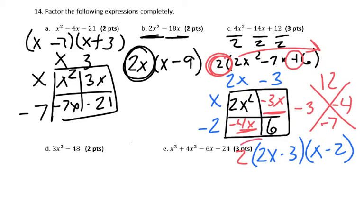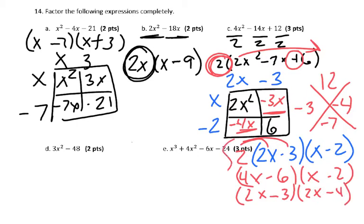Now you could have distributed your 2 into one of them, but you didn't have to. You would have gotten either 4x minus 3, x minus 2, or 2x minus 3 times 2x minus 4. However, any of them, each of these is correct. This would have been, I guess, the proper way to get it out.